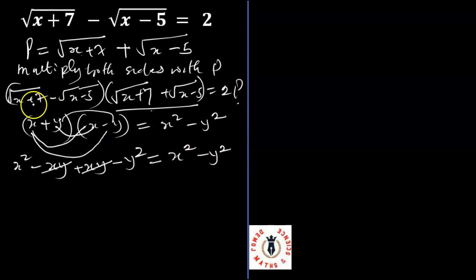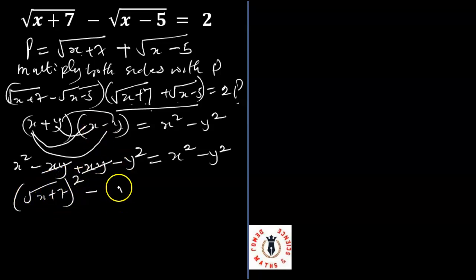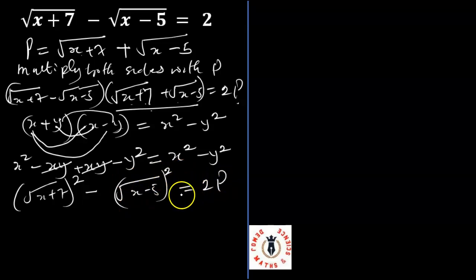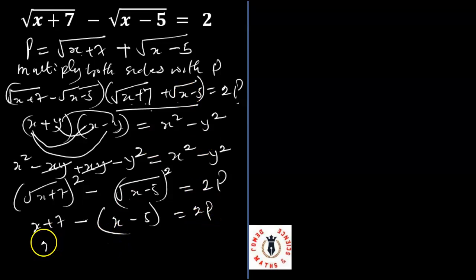We're going to use the same idea here. The root of x plus 7 minus the root of x minus 5, multiplied by the root of x plus 7 plus the root of x minus 5, gives the root of x plus 7 all squared minus the root of x minus 5 all squared, which equals 2P. That simplifies to x plus 7 minus x minus 5 equals 2P. Then, since minus times minus gives plus, we get x plus 7 minus x plus 5 equals 2P.